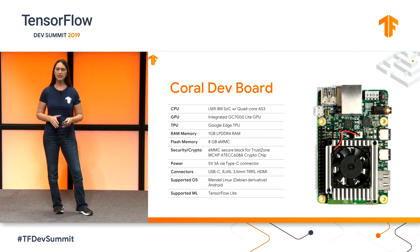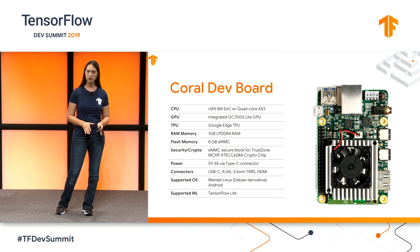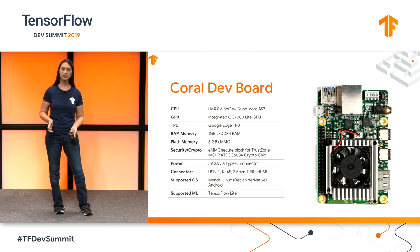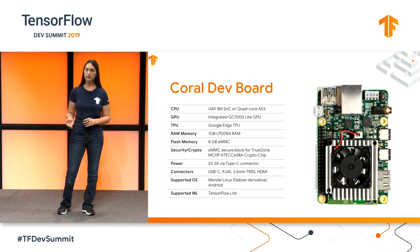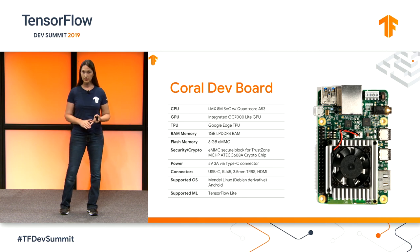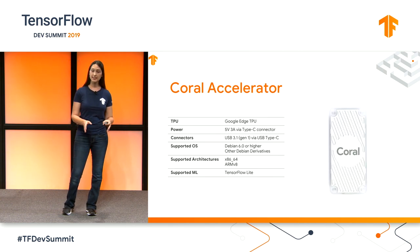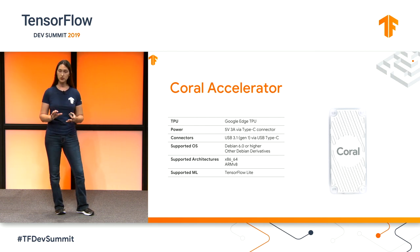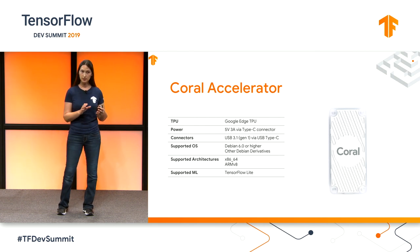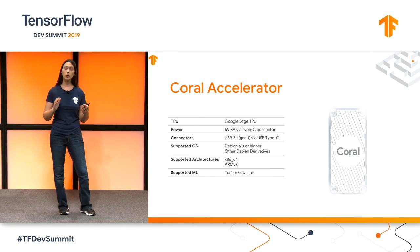The first product is the Coral Dev Board — a single-board computer with a removable SOM that runs Linux and Android. The SOM itself has a gigabyte of RAM, a quad-core A53 SOC, Wi-Fi and Bluetooth, and of course the Edge TPU. Our second product is the Coral Accelerator — the Edge TPU connected via USB-C to whatever development system you need, be it a Raspberry Pi or a Linux workstation.